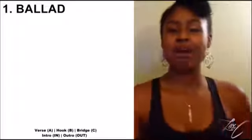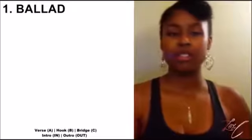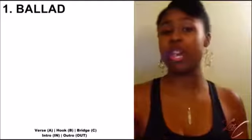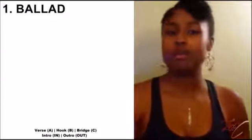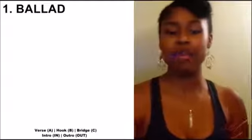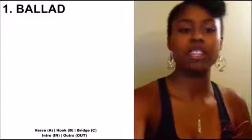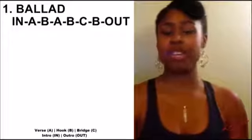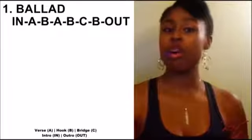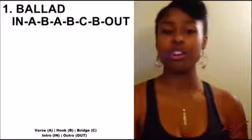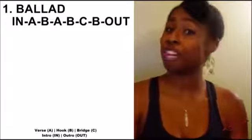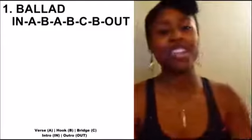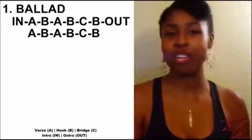The first type of song is the ballad, and its structure is going to vary slightly. One version has an intro and an outro, the other doesn't, but the layout is essentially the same. So one version is structured as A, B, A, B, C, B, Out — which translates to intro, verse, hook, verse, hook, bridge, hook, outro. The other version, without the intro and outro, is just A, B, A, B, C, B — or verse, hook, verse, hook, bridge, hook.